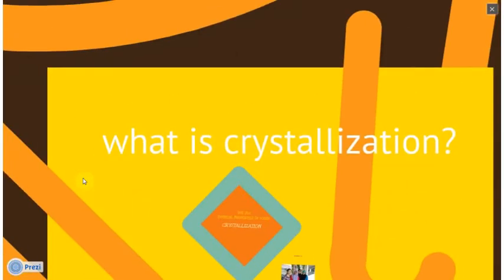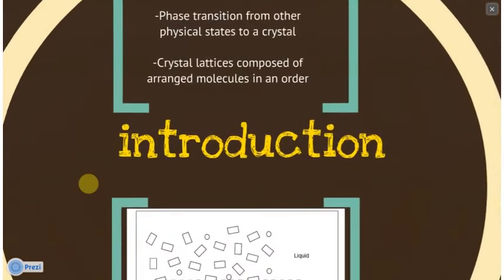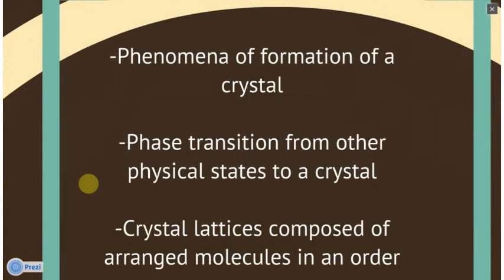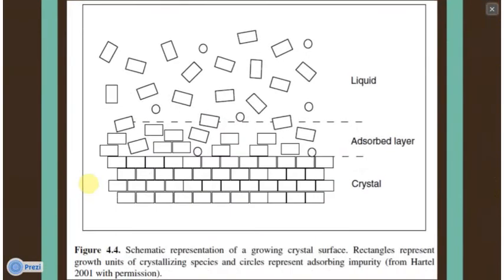So let's get back to what we want to present today. What is crystallization? Crystallization is basically a term that describes several different phenomena related to the formation of a crystalline lattice structure, which can also be explained as a phase transition of a liquid, solution, or gas to a crystal. As you can see in this schematic diagram, the molecules fall from the liquid layer into the absorbed layer, and then form an orderly arranged crystal.